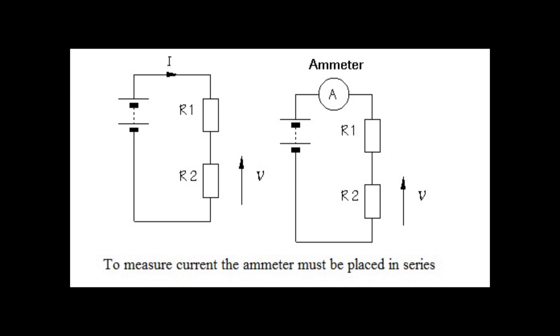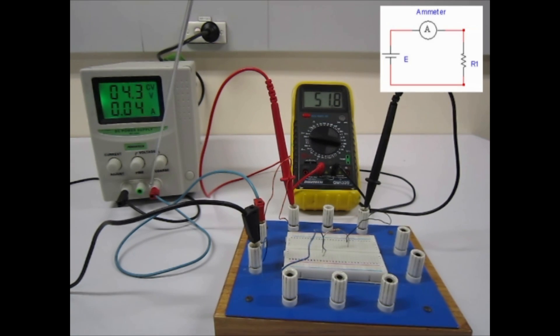To measure the current the multimeter must act as an ammeter. When measuring current we place the ammeter in series with the element we are measuring. We do this because we know that series connected circuit elements carry the same current.